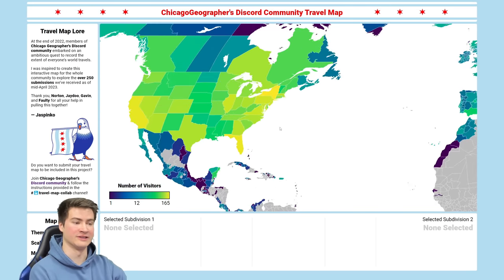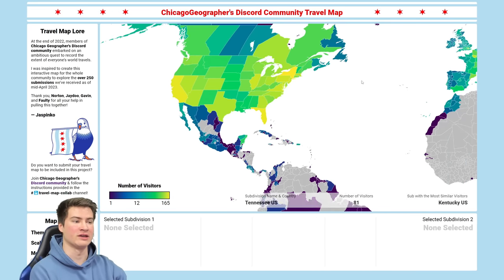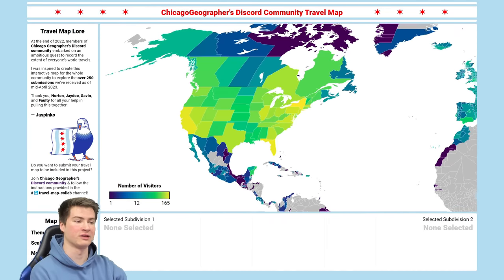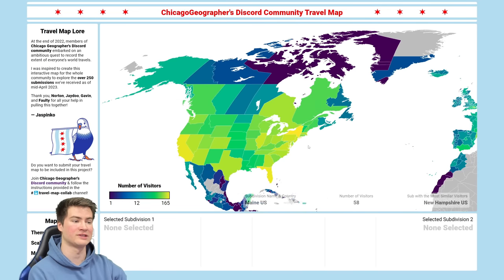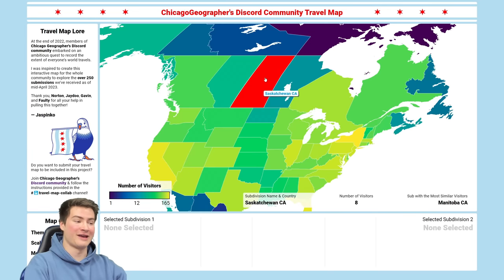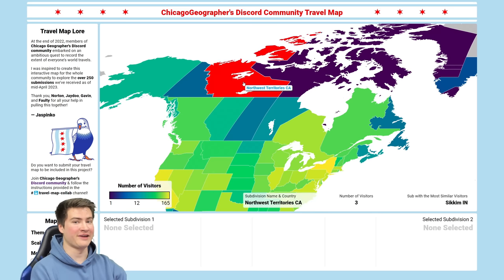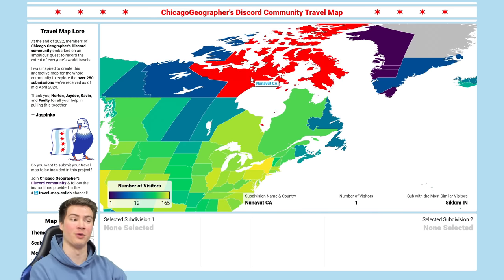New York is remaining the most visited. A lot of the earlier patterns we can see from the first video, especially in the US and Europe — the most populated states have been visited the most. One thing that stands out to me now in Canada is we have Saskatchewan visitors. In the first video we had nobody visiting there, now we have eight people. We've also finished all the territories now, meaning that Canada is completed, which is really cool — only one Nunavut visitor.